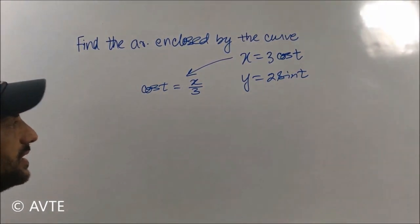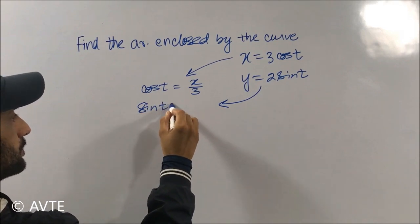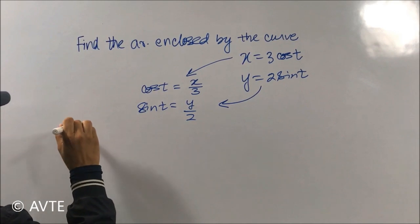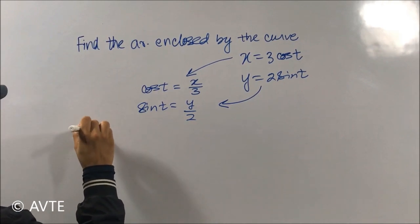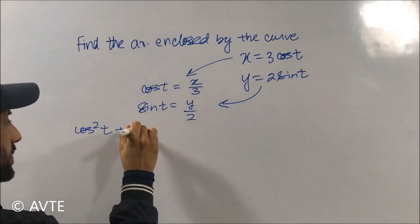Similarly sine t will be Y upon 2. Now what you can do, we all know that cos square theta plus sine square theta is 1, so what is cos square t plus sine square t?